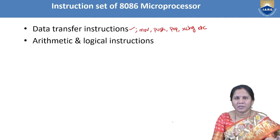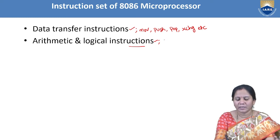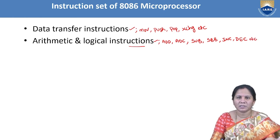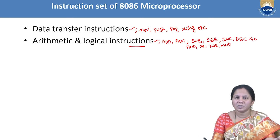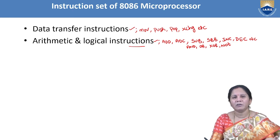The next classification is arithmetic and logical instructions, used to perform arithmetic and logical operations. Arithmetic instructions include add, add with carry, subtract, subtract with borrow, increment, and decrement. Logical operations include AND, OR, XOR, and NOT. During arithmetic and logical operations, the flag register will be affected.